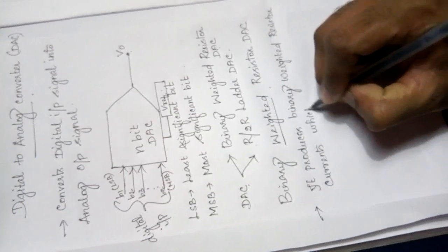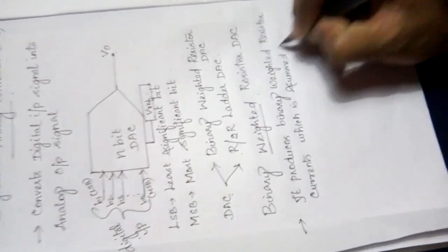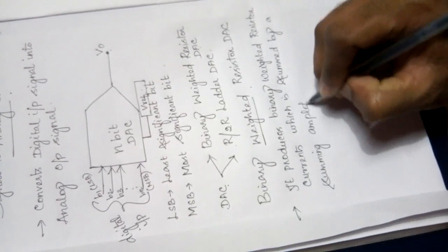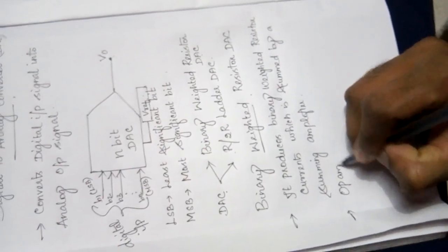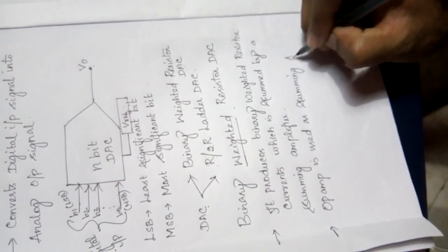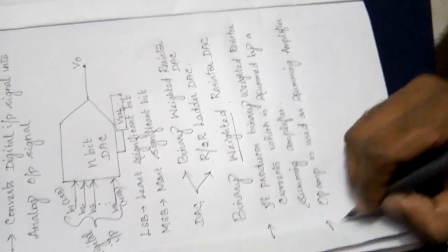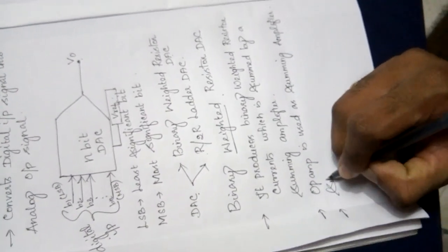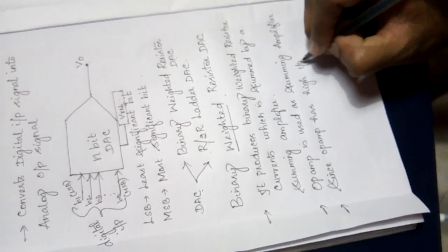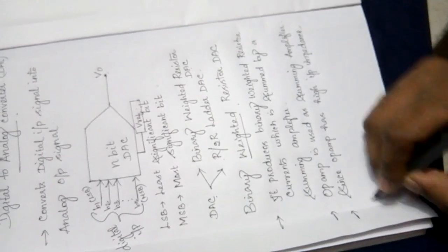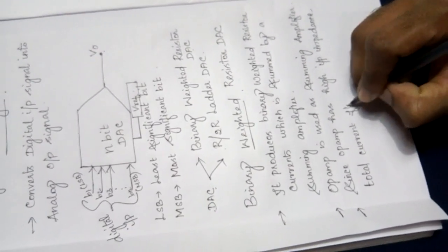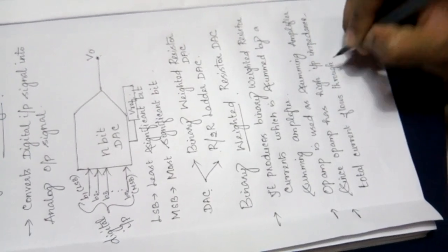These binary weighted currents are summed by a summing amplifier. An op-amp is used as the summing amplifier. Since the op-amp has high input impedance, the total current flows through RF.